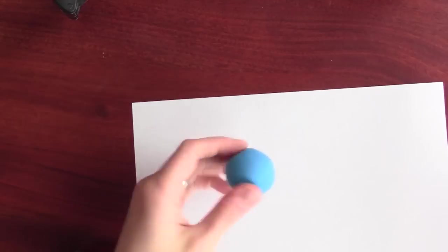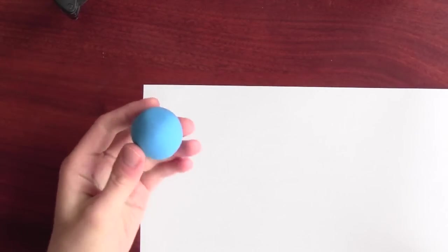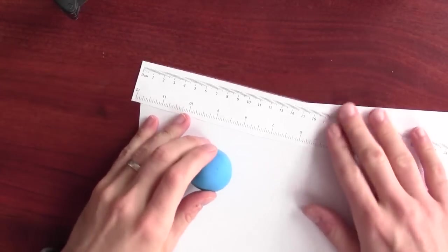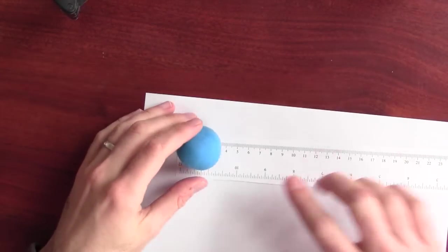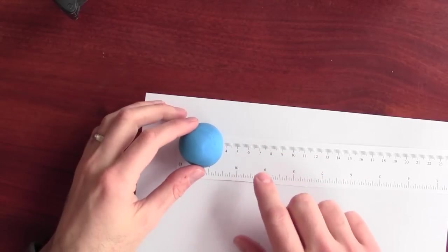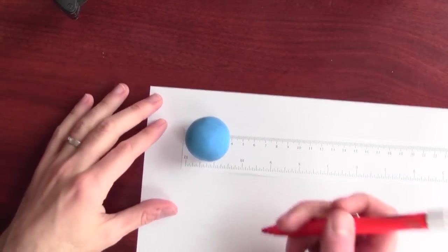We're going to compute the volume of a sphere. Here I've got a clay sphere, and if I measure it, I find that its diameter is about 4.2 centimeters.